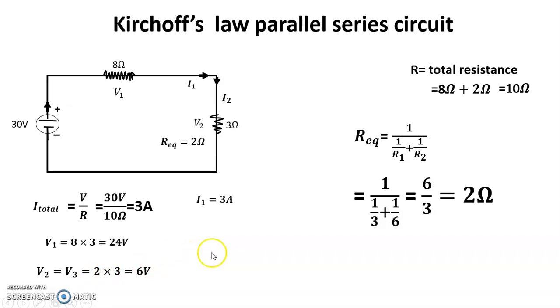So I1 equals 3A, and I2 equals 6 volt divided by 3 ohm equals 2 amperes, and I3 equals 6 volt divided by 6 ohm equals 1 ampere.